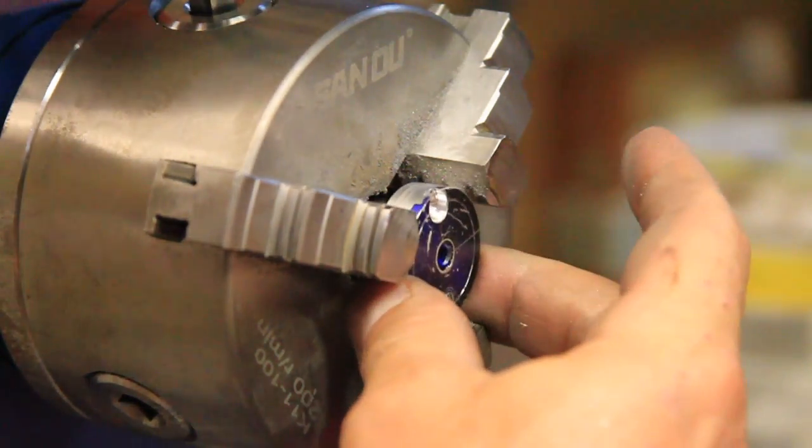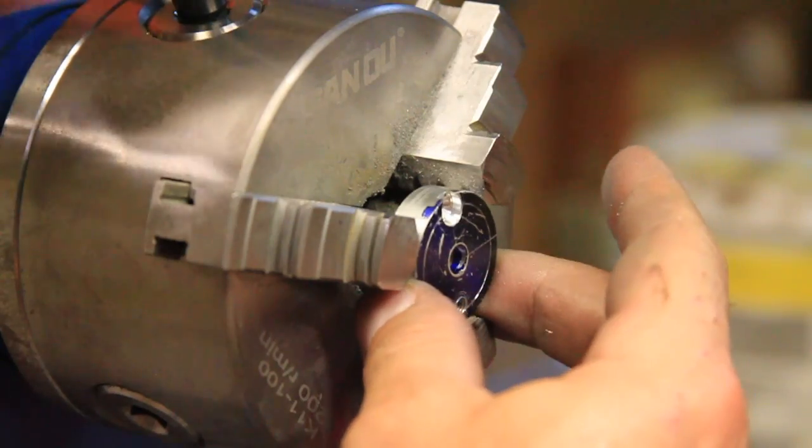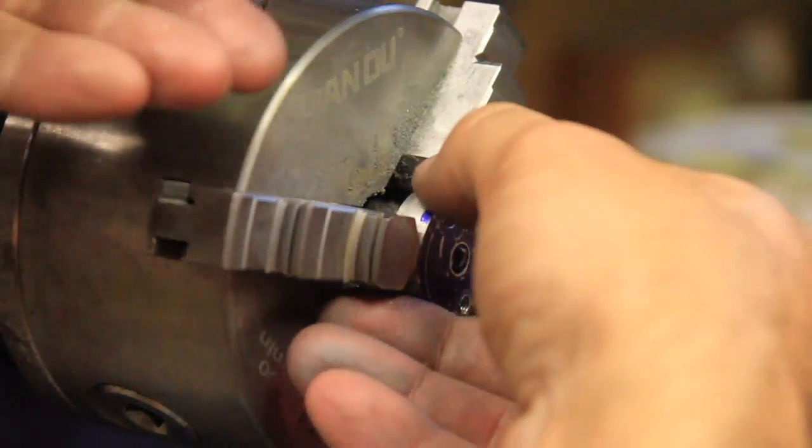The last bit of machining that needs to be done is to open up the backside of the first piece to be able to accept the bearing.